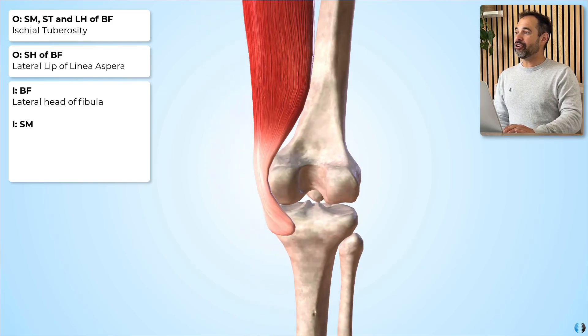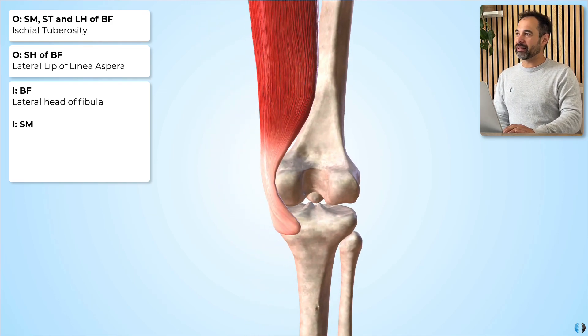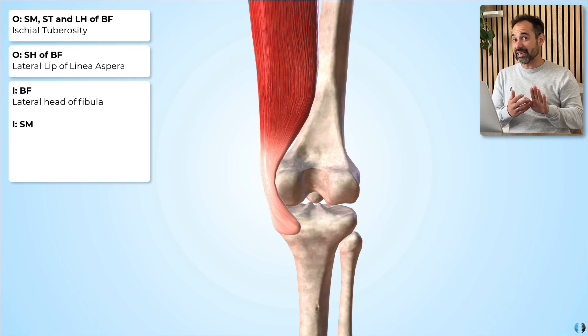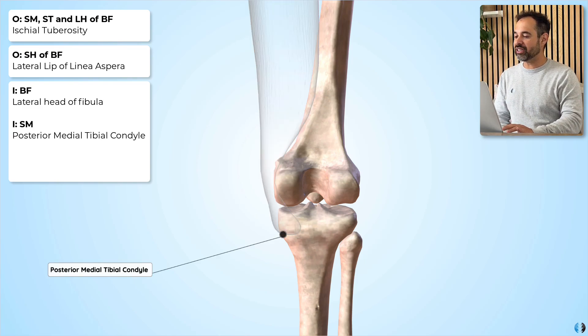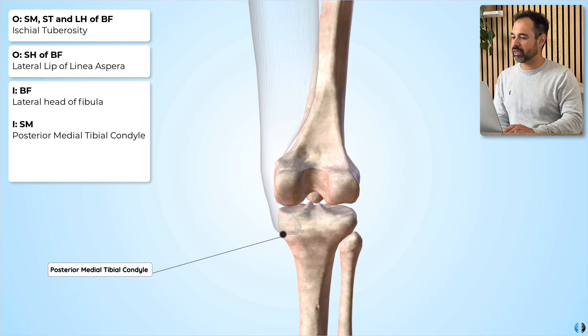Semimembranosus is probably the most straightforward one — it runs straight down the posterior thigh and inserts into the posterior medial tibial condyle.